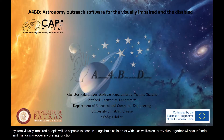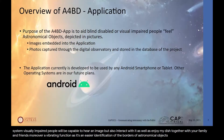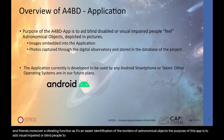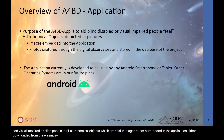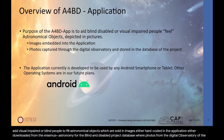Moreover, a vibrating function assists in easier identification of the borders of astronomical objects. The purpose of this app is to aid visually impaired or blind people to feel astronomical objects shown in images, either hardcoded in the application or downloaded from the Erasmus Plus Astronomy for the Blind and the Disabled project database, where photos from the digital observatory of the project are stored.